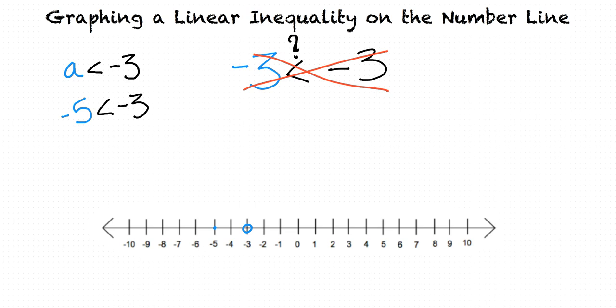So if it said a is less than or equal to negative 3, instead of just a is less than negative 3, we would fill in the circle. But since a cannot equal negative 3, it can only be less than negative 3, we don't fill in the circle? Right.